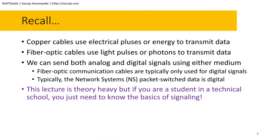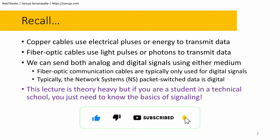Please recall from my previous lectures that copper cables use electrical pulses or energy to transmit data, while fiber optic cables use light pulses or photons to transmit data. We can send both analog and digital signals using either medium, but typically fiber optic communication cables are used for digital communication when used in infrastructures.